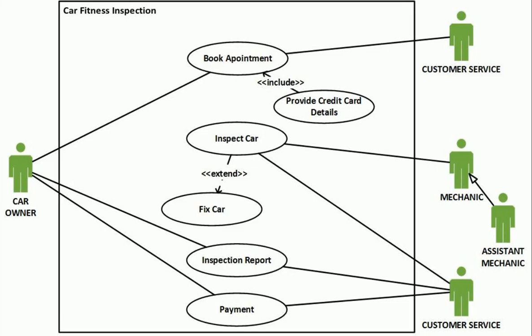In this video we'll see what a use case diagram is in software engineering. In business analysis and systems development, a use case diagram is used to illustrate the overall picture — the big picture — of a system or part of a system. To illustrate what a use case diagram is and what its components are, let us assume a real-life scenario.